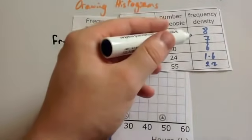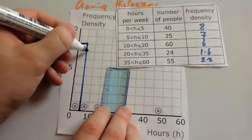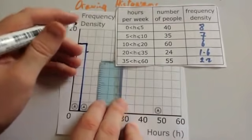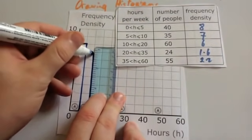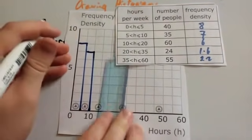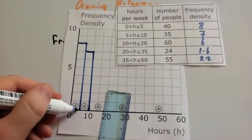The next bar, 5 to 10, goes up to 7. So 5 to 10 goes up to 7. So there's 7, 5 to 10, and it goes up to 7. So 0 to 5, 5 to 10.